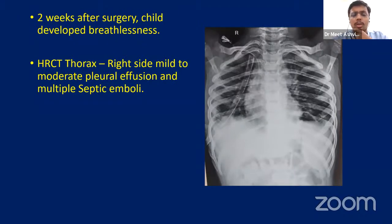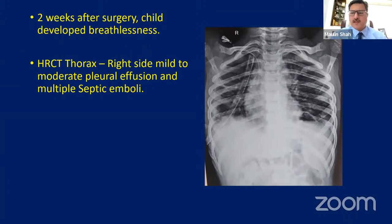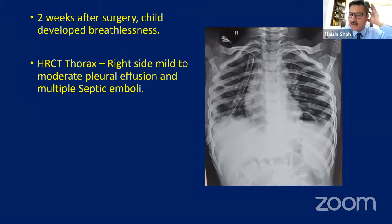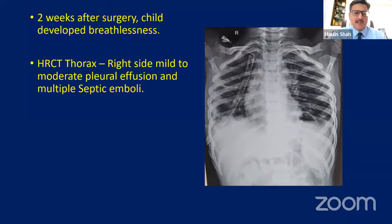The first patient — the six-year-old boy — two weeks after surgery developed severe breathlessness. HRCT thorax showed right-side mild to moderate pleural effusion and multiple septic emboli. He had to undergo ICD insertion. Both patients were on low molecular weight heparin, and we were constantly checking INR, PT, and APTT.